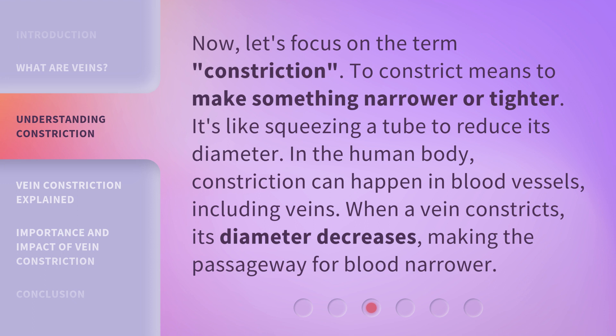Now let's focus on the term 'constriction.' To constrict means to make something narrower or tighter — it's like squeezing a tube to reduce its diameter. In the human body, constriction can happen in blood vessels, including veins. When a vein constricts, its diameter decreases, making the passageway for blood narrower.